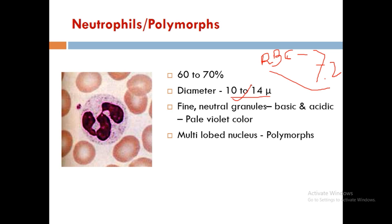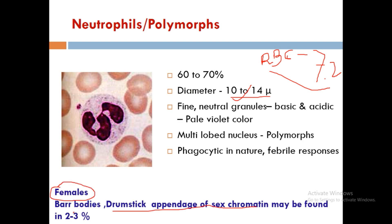The lobes of the nucleus range from two to six, depending upon age. Two-lobed neutrophils are the most juvenile or newly formed, while six-lobed neutrophils are the most adult — the senior citizens. Functionally they are phagocytic in nature. In females, Barr bodies or drumstick appendages of sex chromatin are found in 2 to 3 percentage of neutrophils, allowing sex identification.